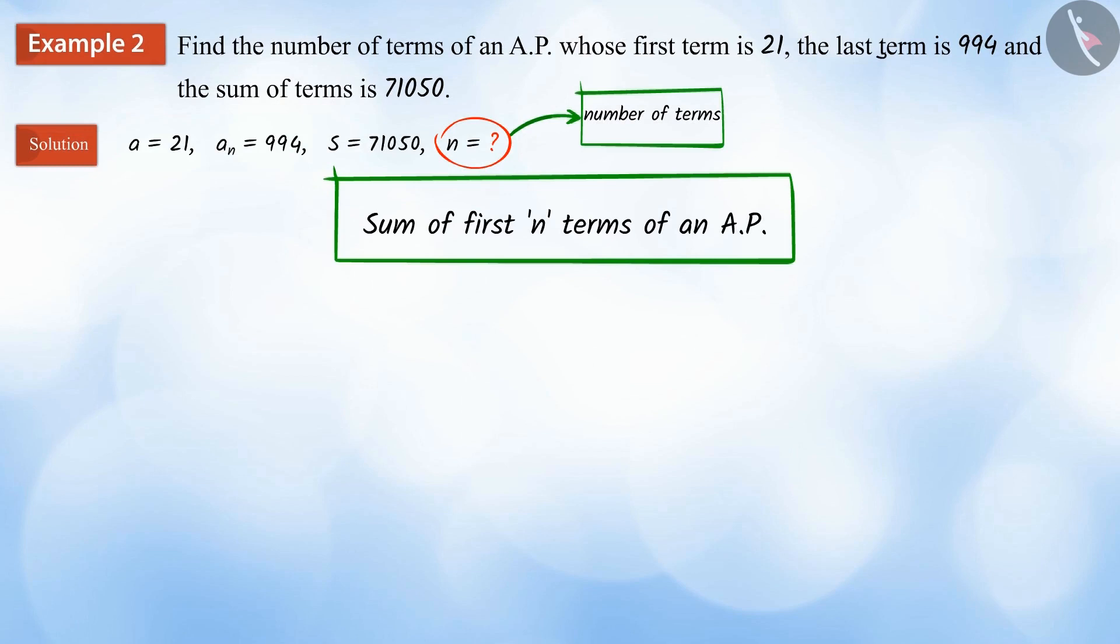Yes. Here, we have to use the formula for the sum of the first n terms of the arithmetic progression. By substituting the values of a, a_n and s in the formula, we get n equals to 140.